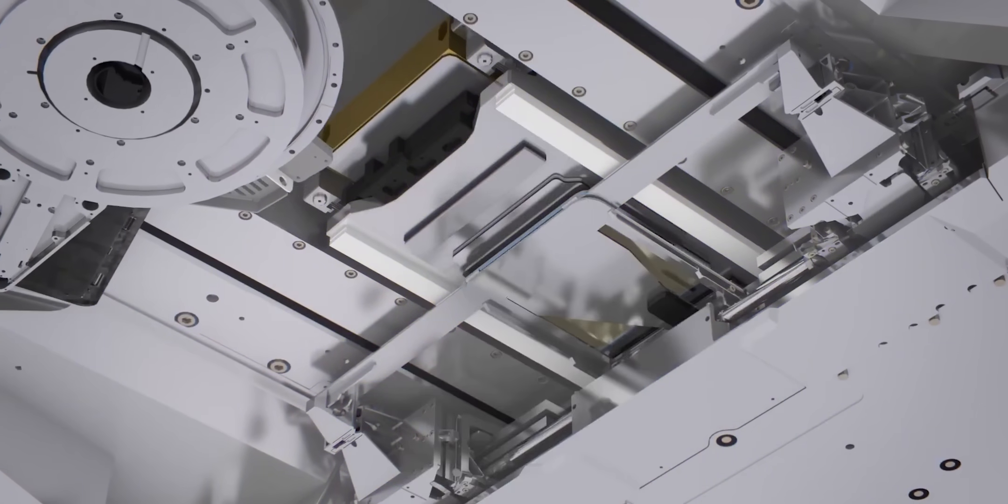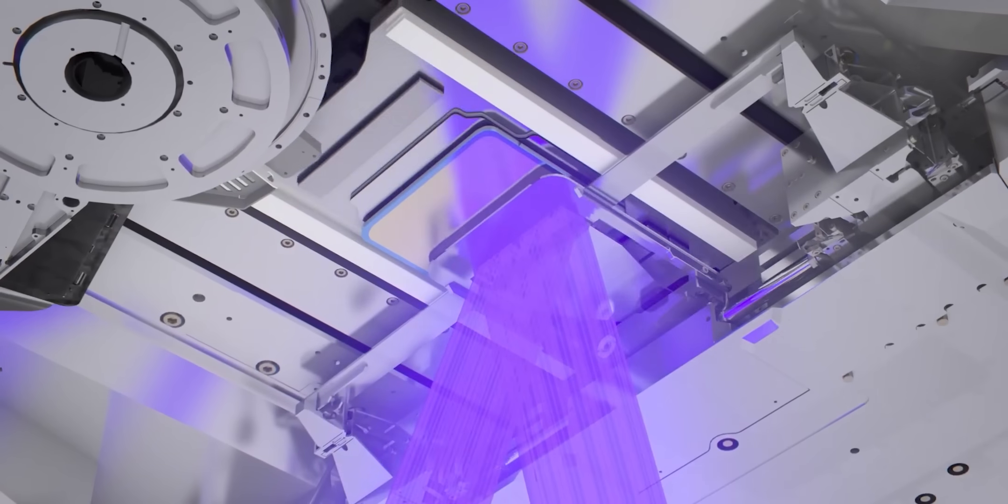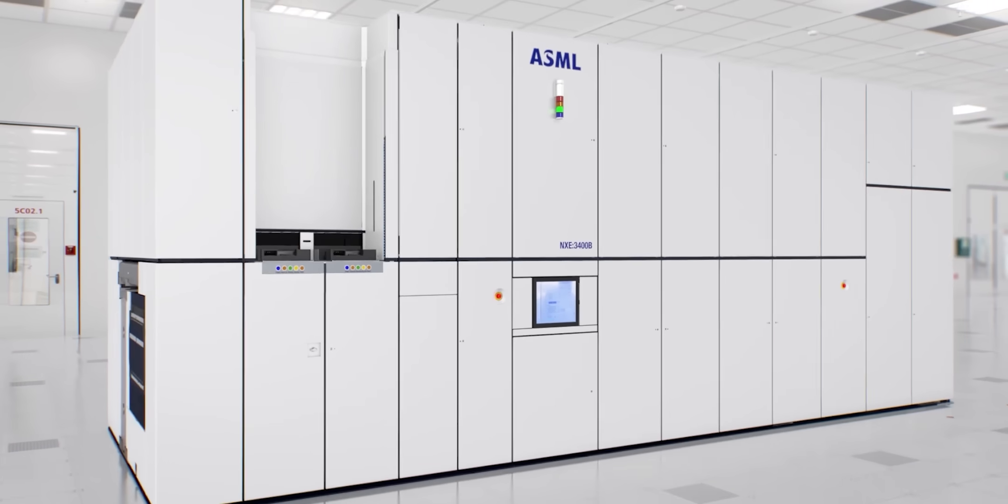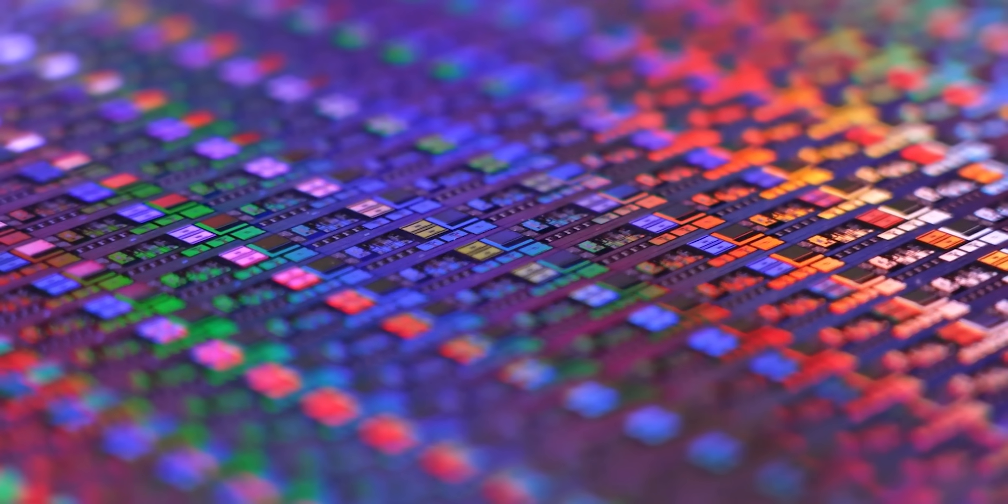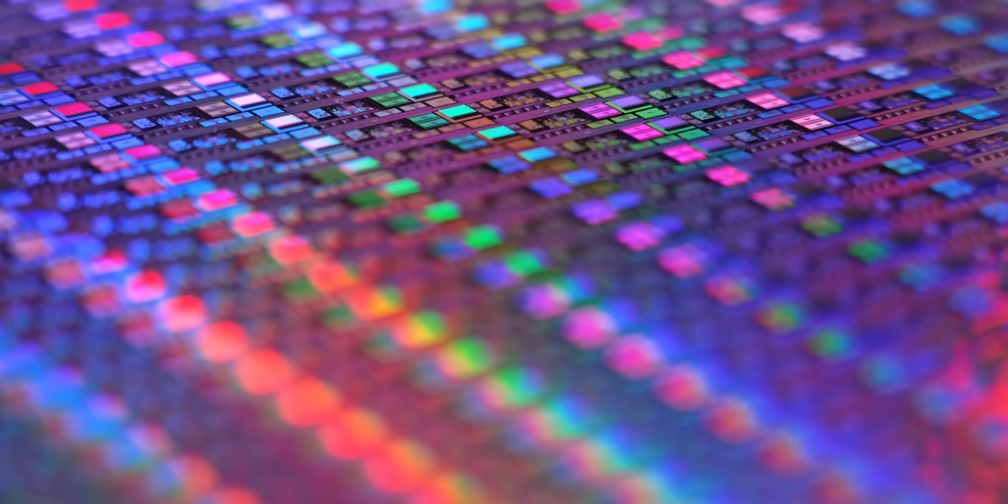Here's a fun example. The mirrors that focus and redirect the EUV lasers inside these lithography machines are literally the flattest structures known to man. That's a big deal because they're needed to etch all of the intricate designs into all of the most advanced microchips that we use today.